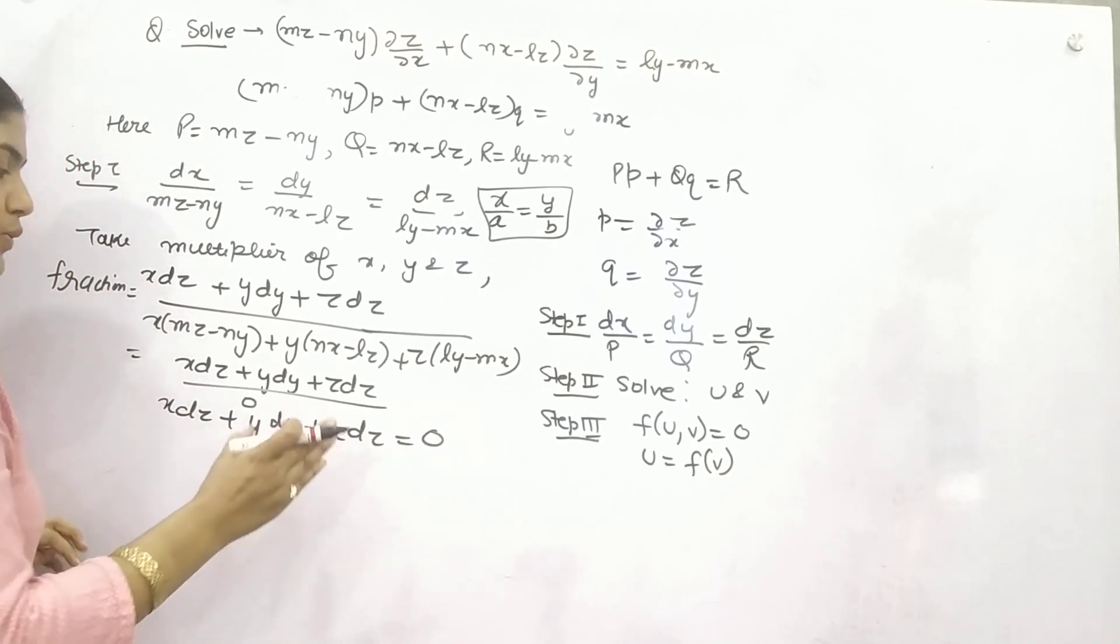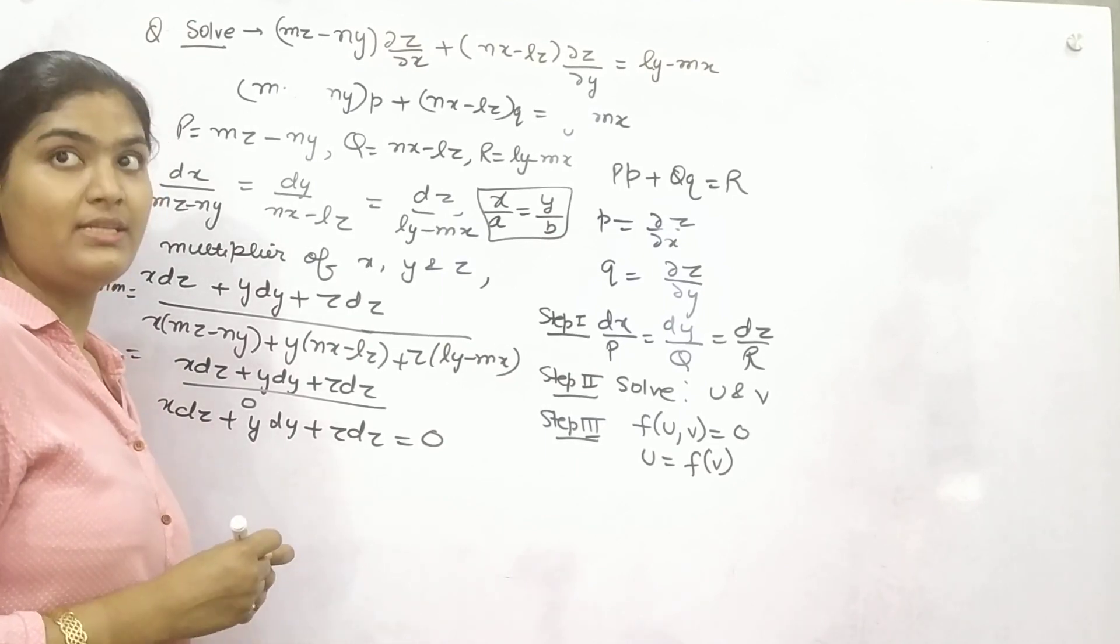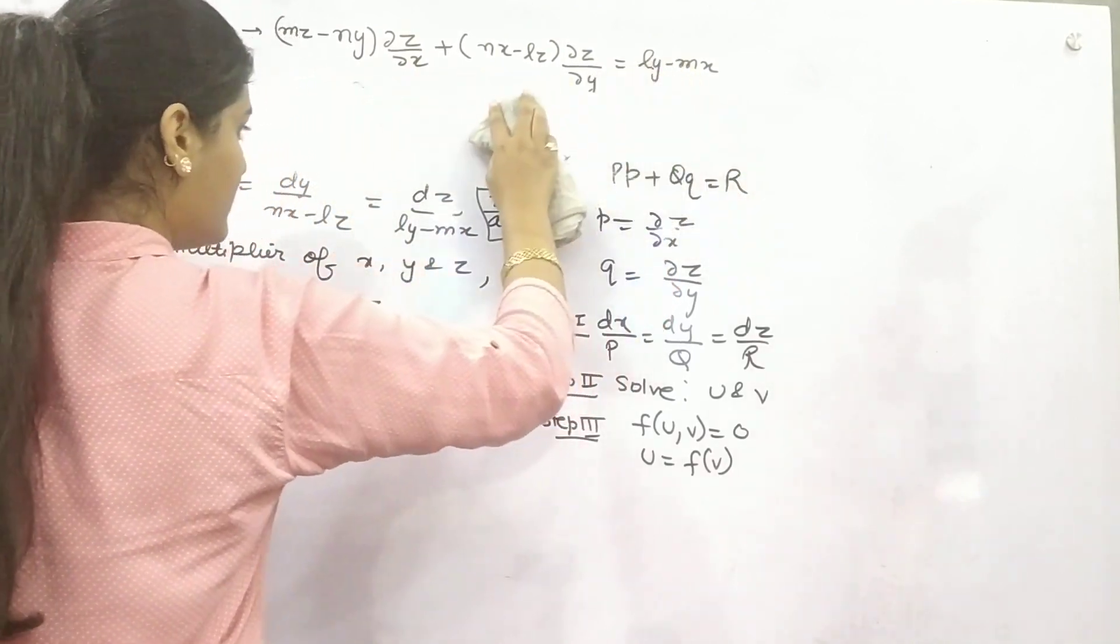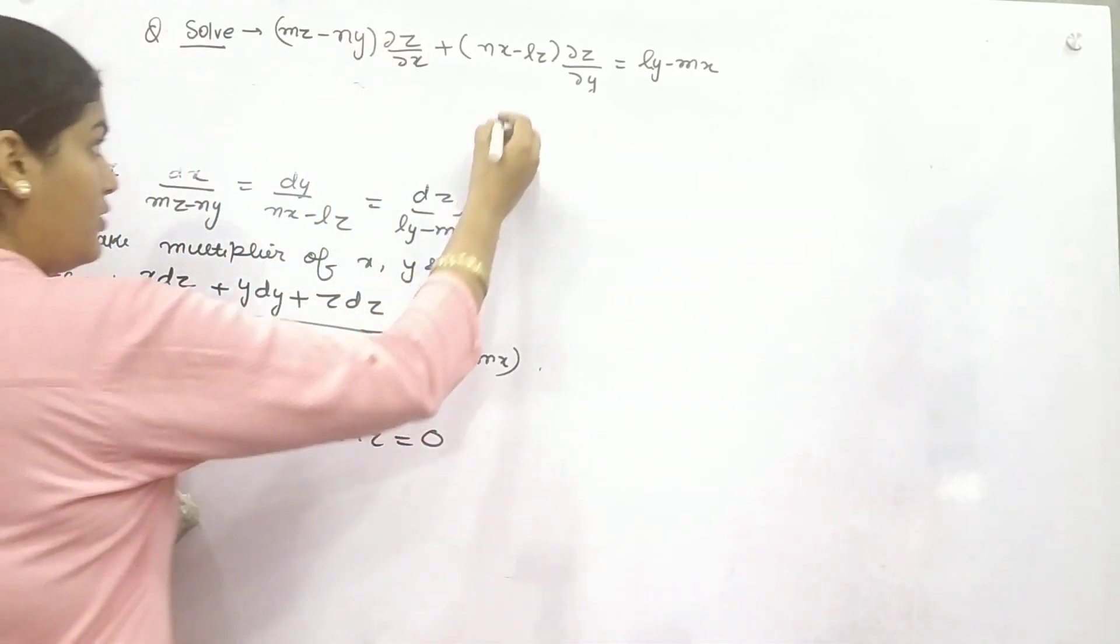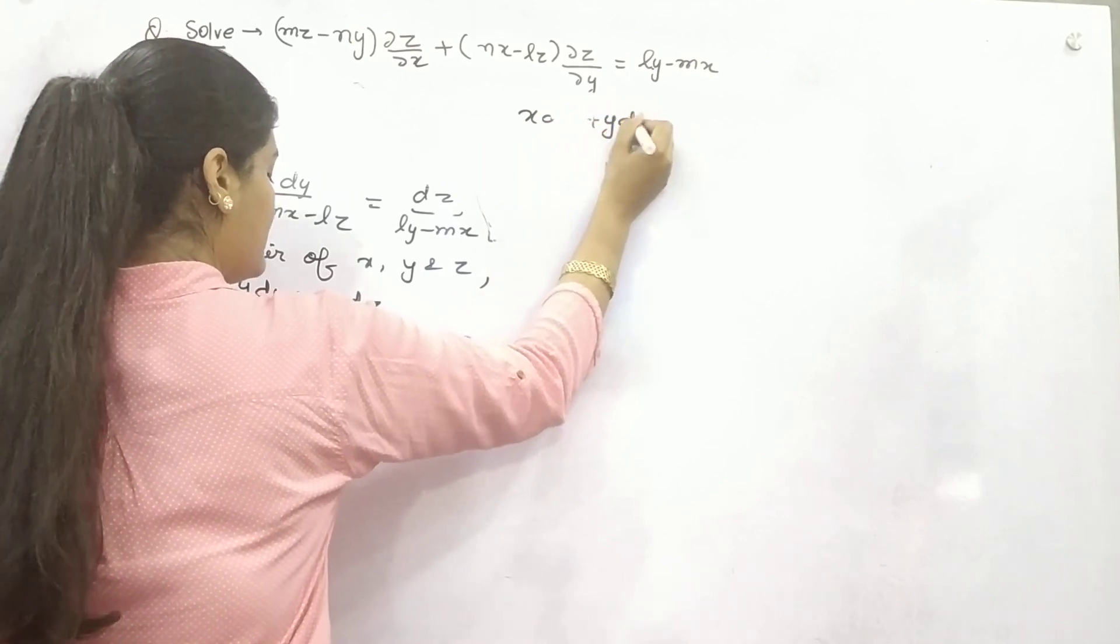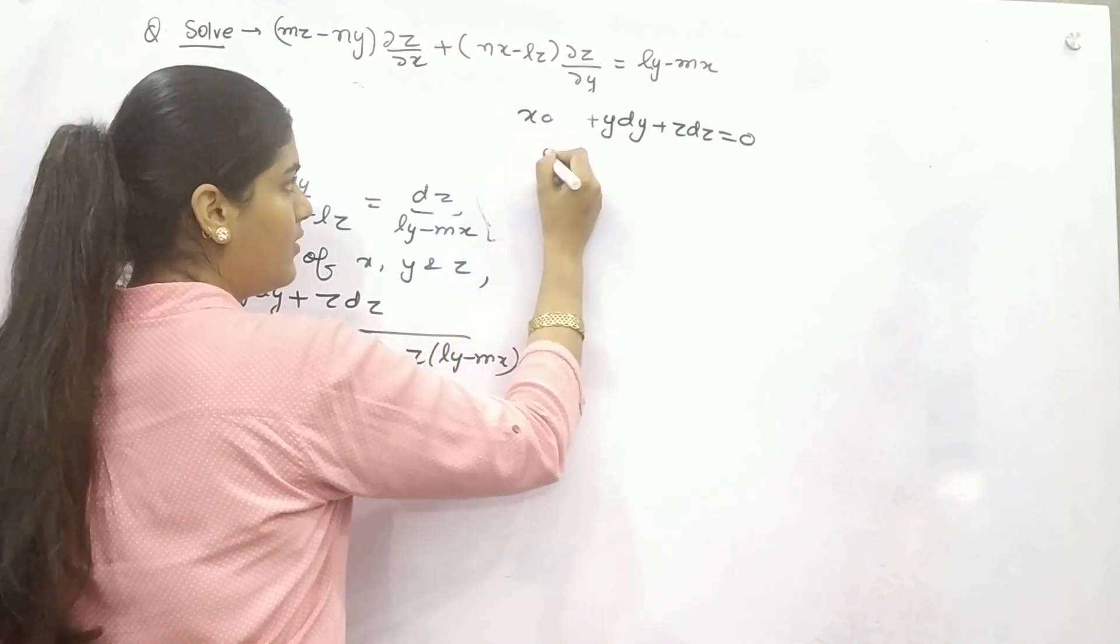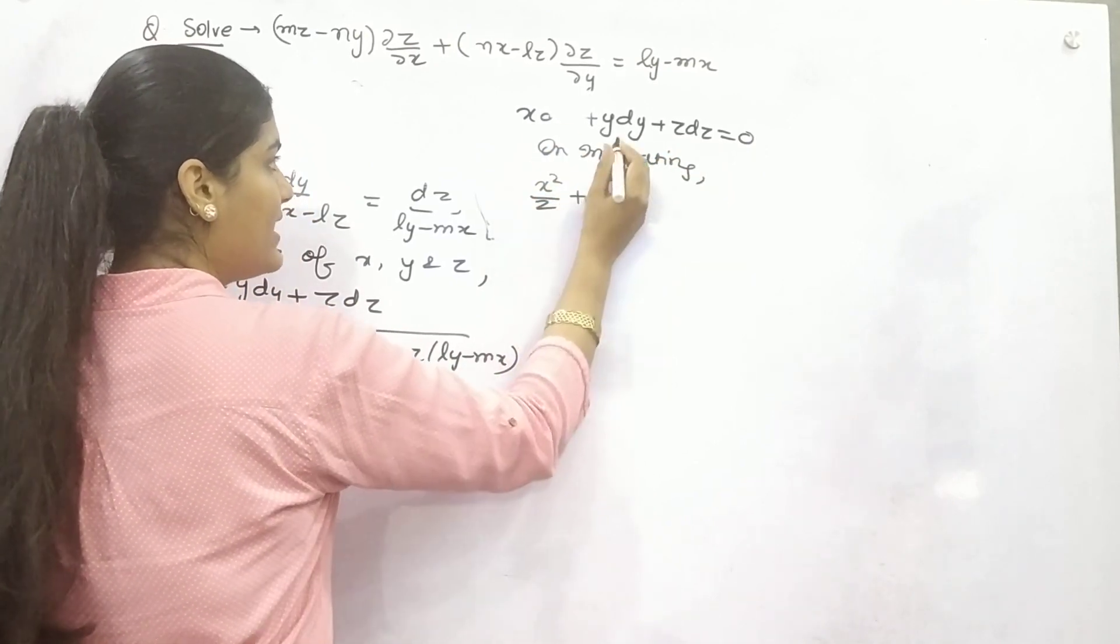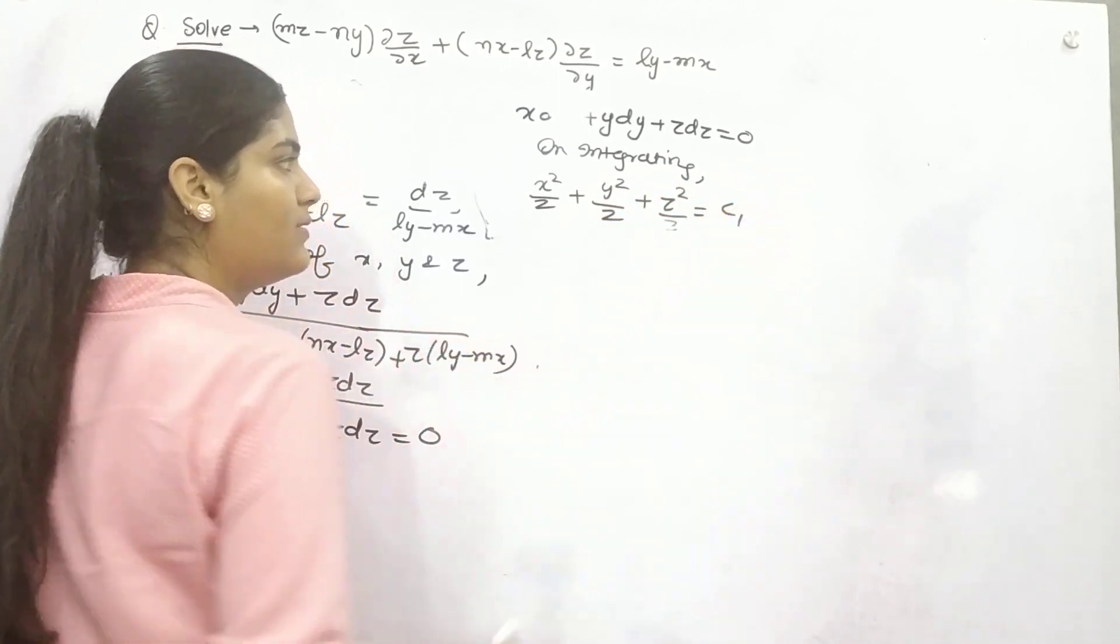Now you have got this in the form of dx, dy, dz. So what can you do to remove it? Integrate it. Let's do it. So you have got X·dx + Y·dy + Z·dz = 0. Integrating both sides, on integration it will be X²/2 + Y²/2 + Z²/2 = C₁. So X² + Y² + Z² = 2C₁, and we can say C₂, any other constant, whatever you want.